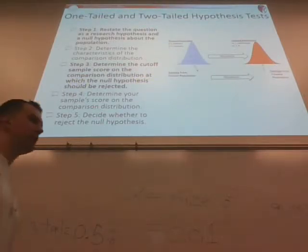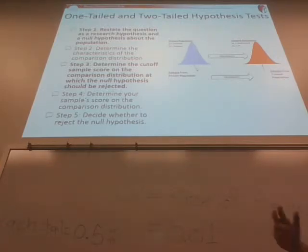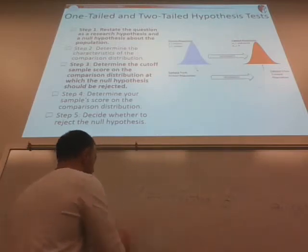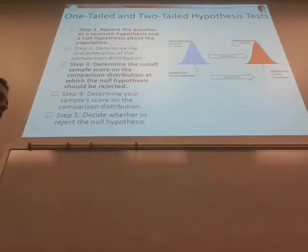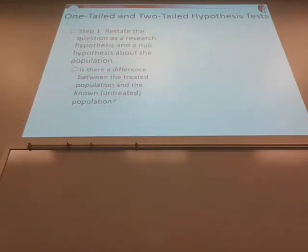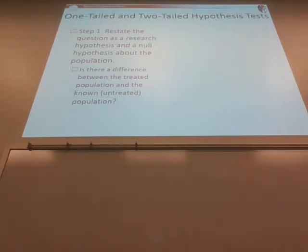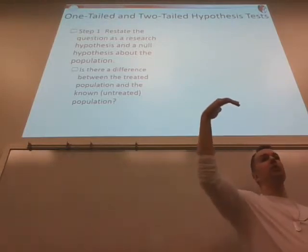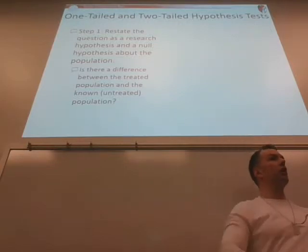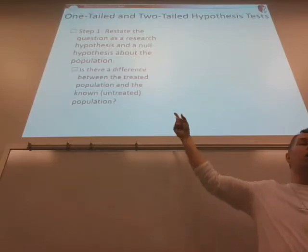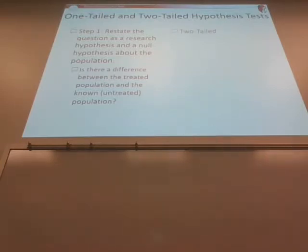Now we need to round out step one. We've introduced one-tailed and two-tailed tests, which impacts step one. So far we've only been doing two-tailed tests. For a two-tailed test, the question is usually: is there a difference between the treated population and the known population? That's non-directional — all we're asking is whether there's a difference. Maybe the treated population is bigger, maybe smaller; like with Harlow's monkeys — maybe they prefer the terrycloth mother, maybe the wire mesh. We don't know the direction, only that there is a difference.